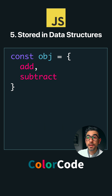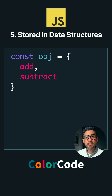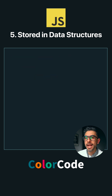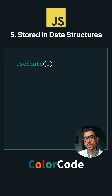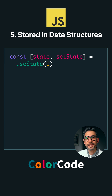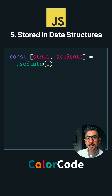By the way, this is the reason we have object methods. And for you React developers out there: when you use a hook like useState and it returns an array including setState and state, what do you think setState is? It's a function. We can do this because functions can be stored inside arrays.